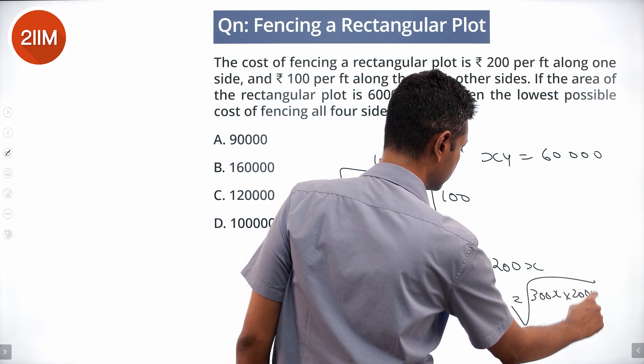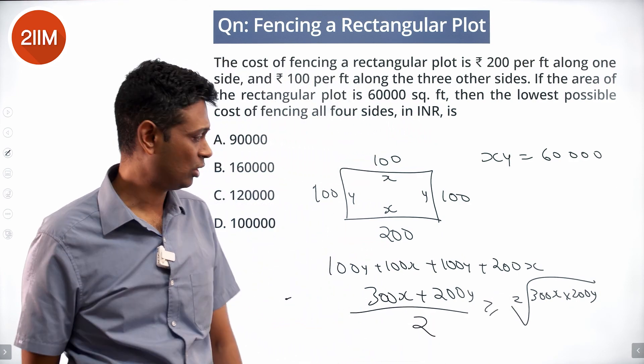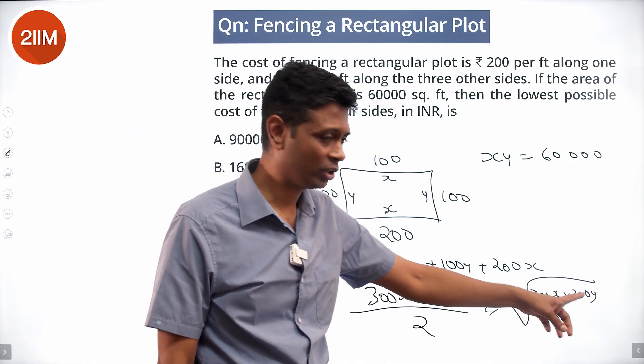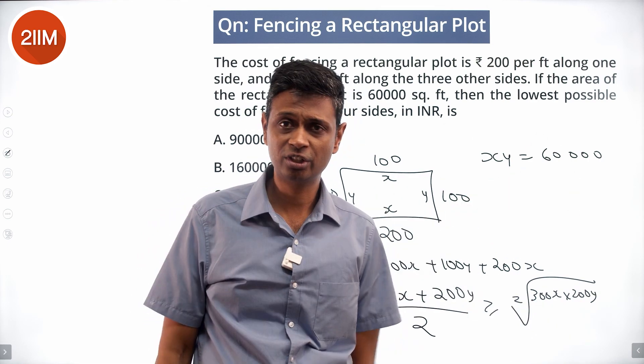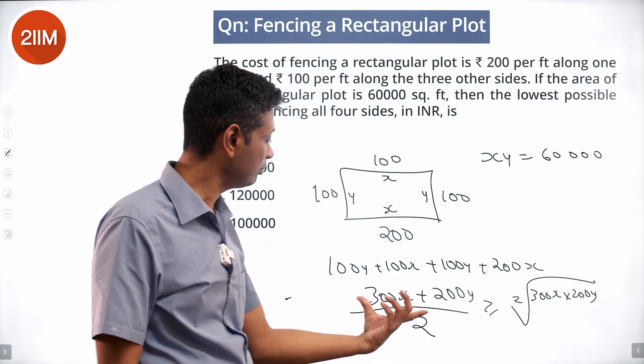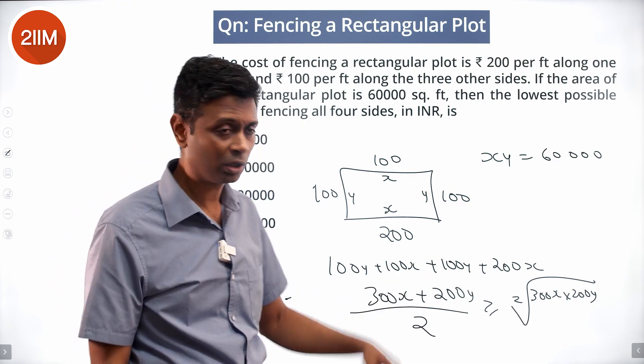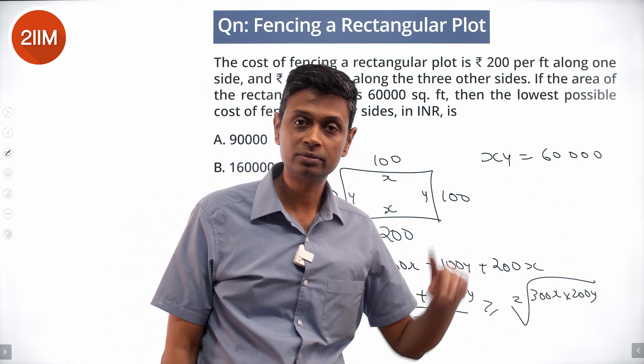300X into 200Y, we can find. How do we find that? We know XY is 60,000. We can find 300X into 200Y, or the minimum value of 300X plus 200Y. It's two times square root of that.